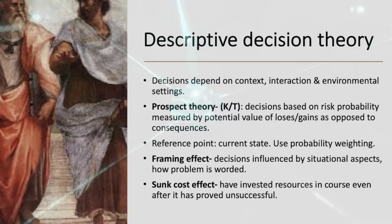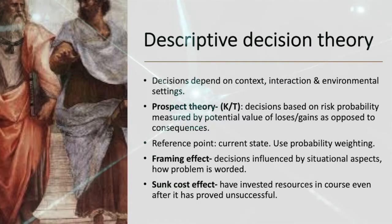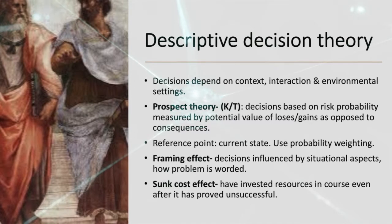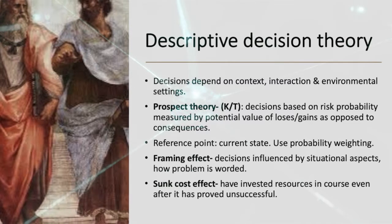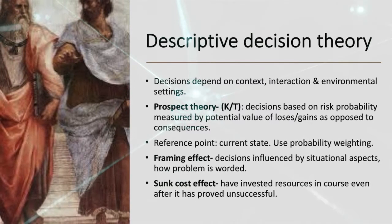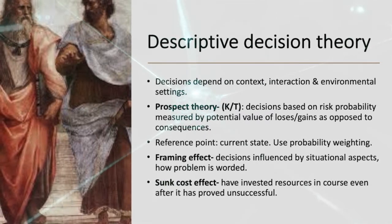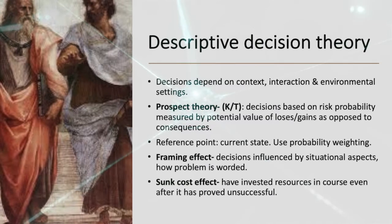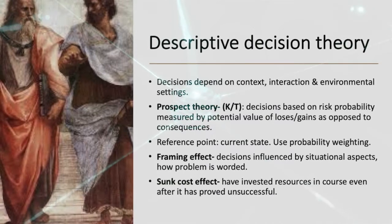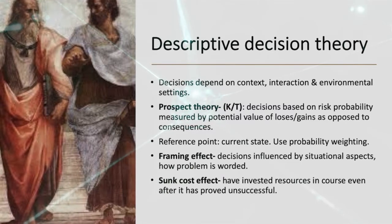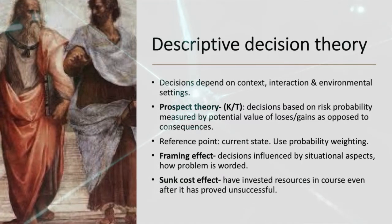Descriptive decision theory states that decisions depend on context, interaction, and environmental setting. Prospect theory, proposed by Kahneman and Tversky, postulates that decisions based on risk probability are measured by potential value of losses or gains as opposed to consequences. Reference points are current states in which individuals use probability weighting.